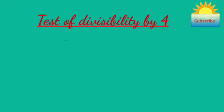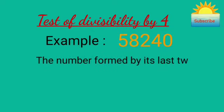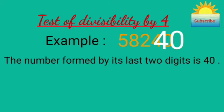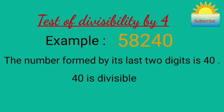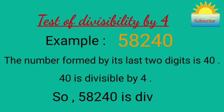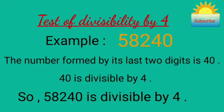For example, consider the number 58,240. The number formed by its last two digits is 40. 40 is divisible by 4, so 58,240 is divisible by 4.